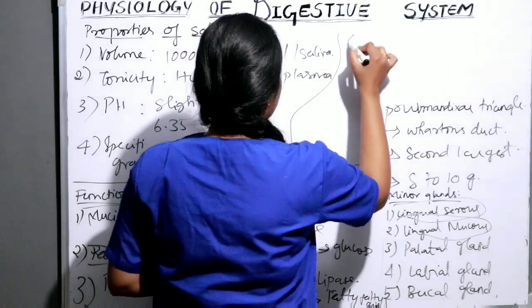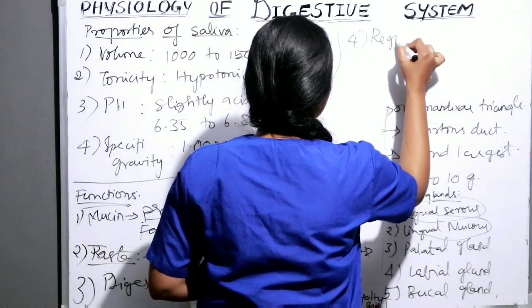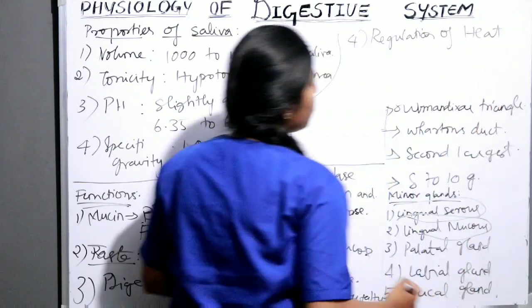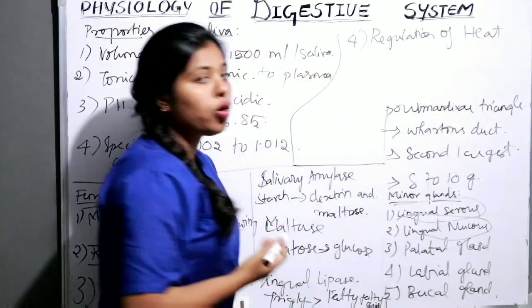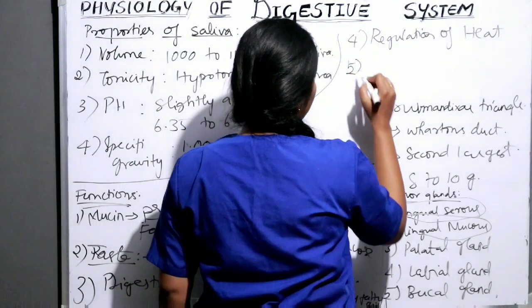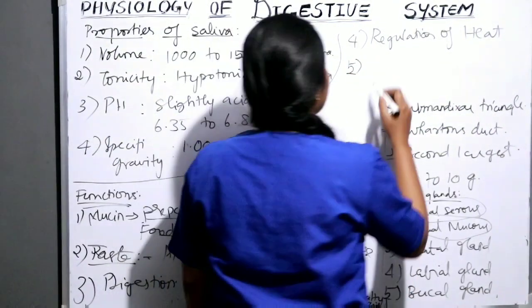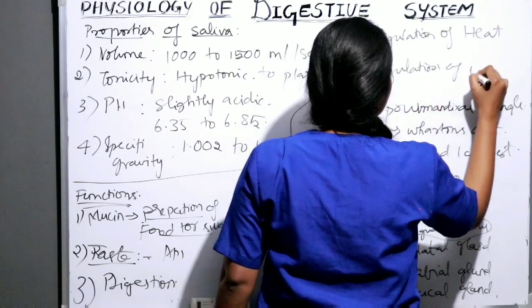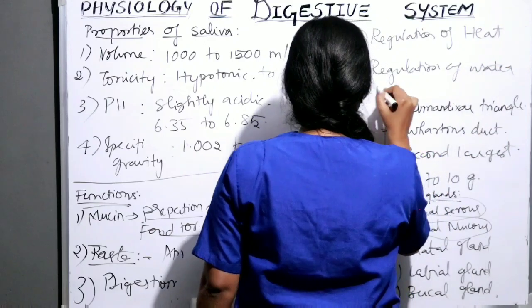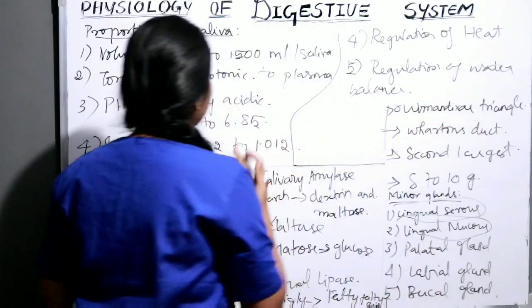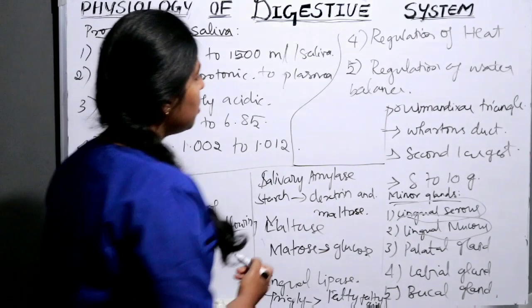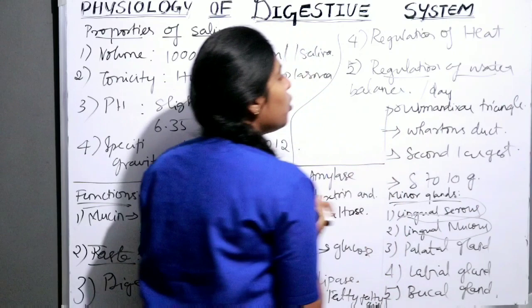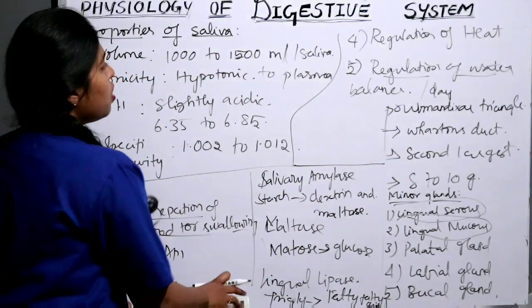Saliva also helps in regulation of heat, though it does not play a major role in humans — it plays a major role in animals, especially dogs. It also helps in the regulation of water balance, because nearly one litre of saliva is secreted per day, so it plays a very important role in regulating water balance in the body.